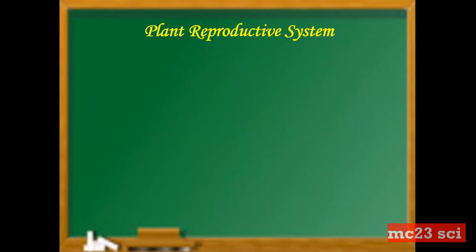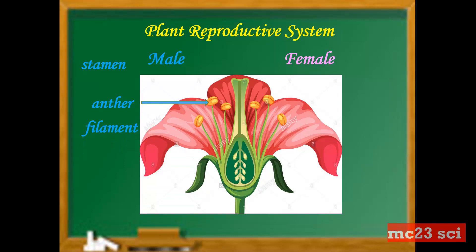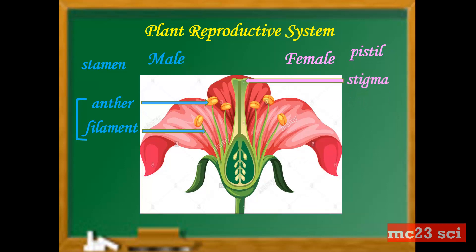Take a look at the picture. The plant reproductive system has male and female organs. The stamen's parts are the anther and the filament. For the female, the pistil consists of stigma, style, and ovary. These three are the parts of the pistil, or the female reproductive organ.